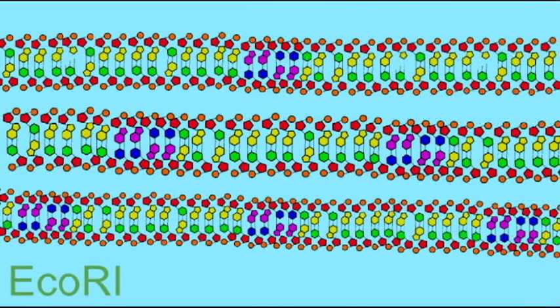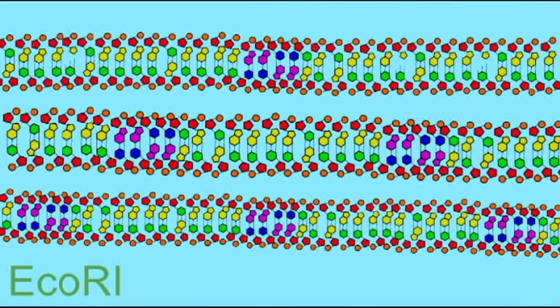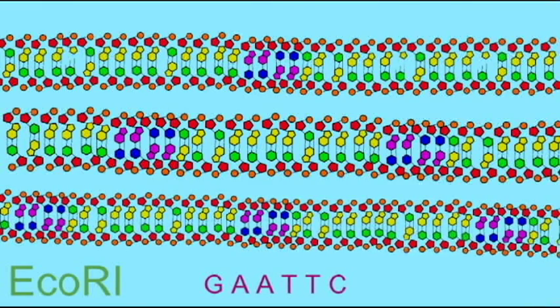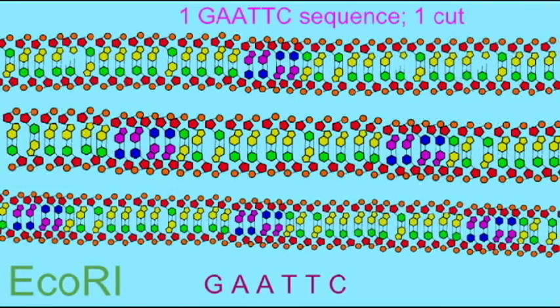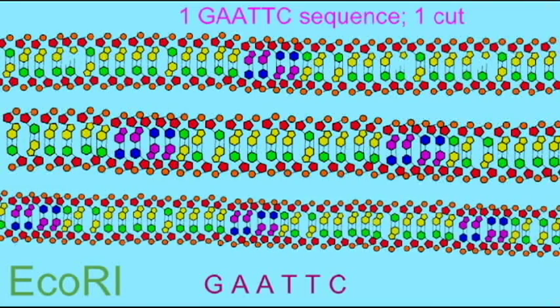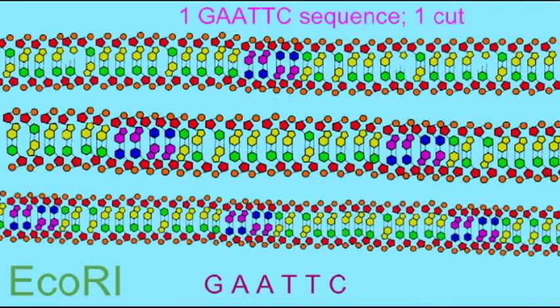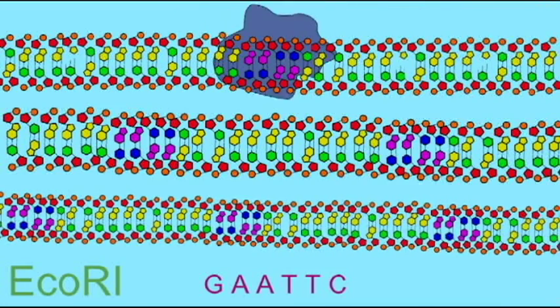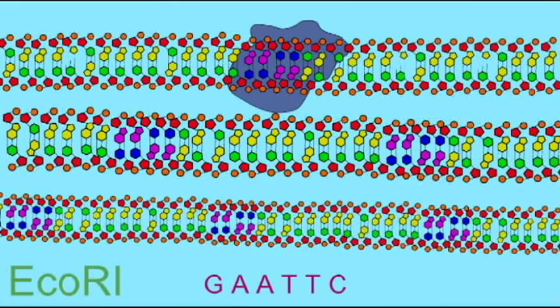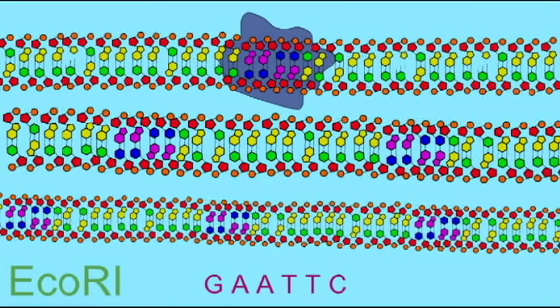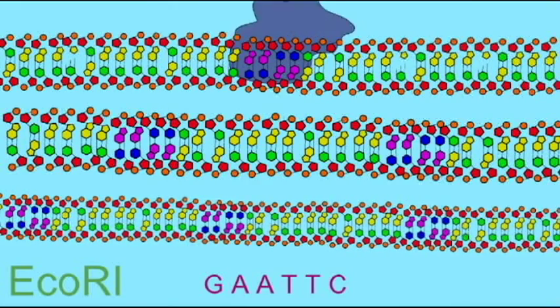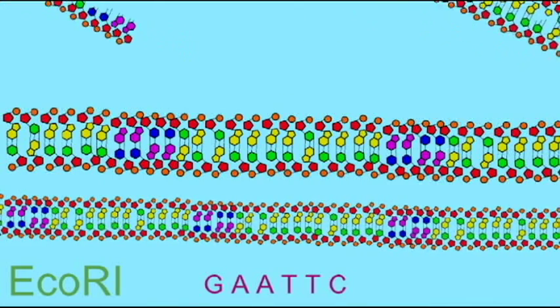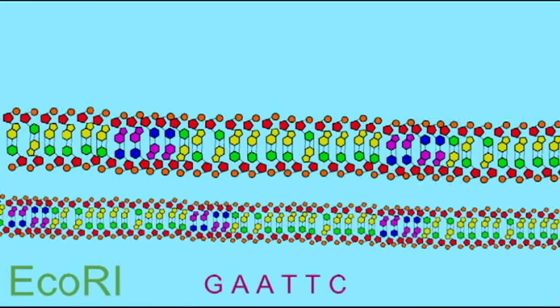The restriction enzyme EcoR1 will only cut a DNA sequence at the specific sequence of G-A-A-T-T-C. And so how many cuts this enzyme will make in a specific DNA molecule depends on how many of these sequences exist in that DNA molecule. So for example, if there is one sequence of G-A-A-T-T-C, then EcoR1 will only make one cut.